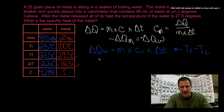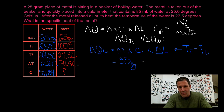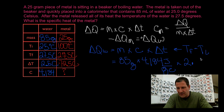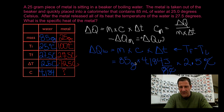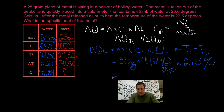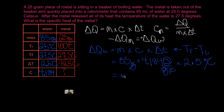Now let's go back and calculate the change in heat of the water. We know the mass of the water is 85 grams, the specific heat of water is 4.184 joules per gram degrees Celsius, and the change in temperature of the water is 2.5 degrees Celsius. We make sure we use all of this for the water — Celsius cancels with Celsius, gram cancels with gram, and we're left with joules. This gives us positive 889 joules. The water gained 889 joules.